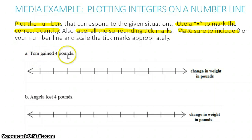Tom gained four pounds. Here's our number line labeled change in weight in pounds. Let's start by labeling these tick marks. This would be zero. Since I'm only going up to the number four, I know that I can increment by ones because four is just four away from zero. So zero, one, two, three, four, and five.